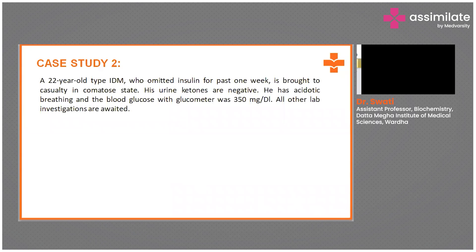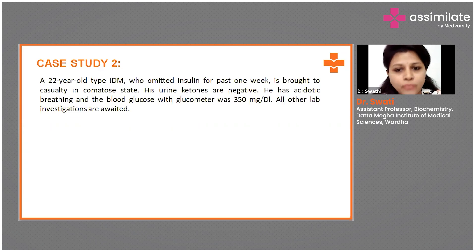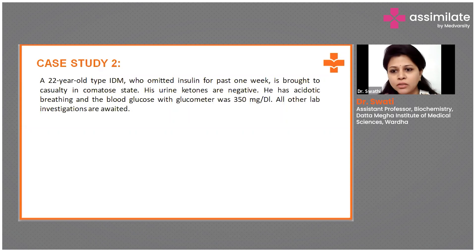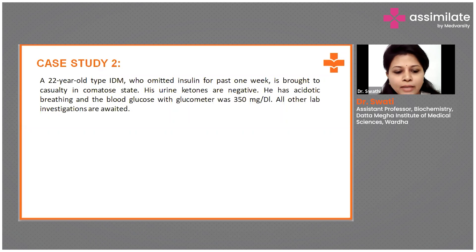This is a case of type 1 diabetes mellitus who has not taken insulin for the past one week and is now comatose. We can see some mixed features of diabetic ketoacidosis — it has acidotic breathing, but it might not be DKA because urine ketones are negative. The blood glucose monitored is 350 mg per deciliter.